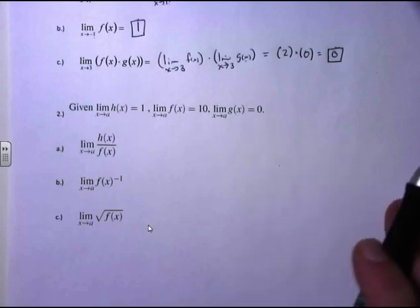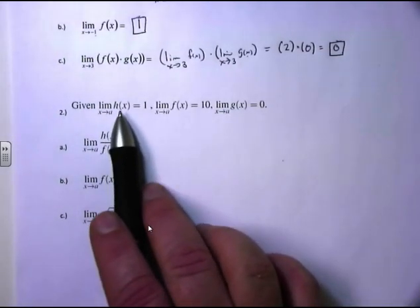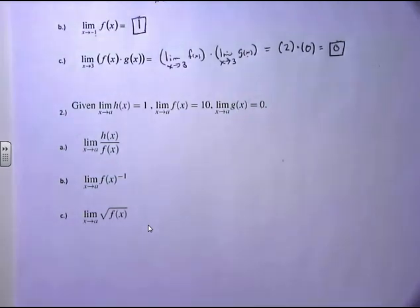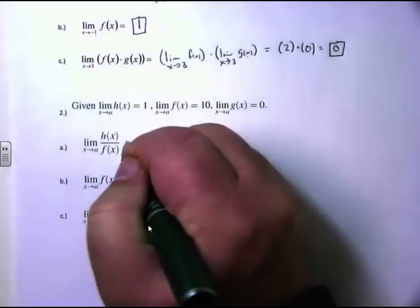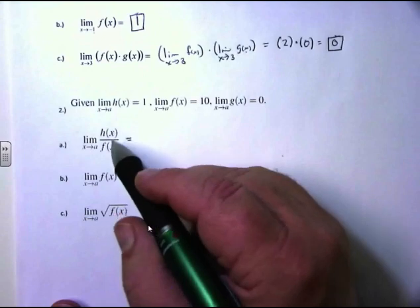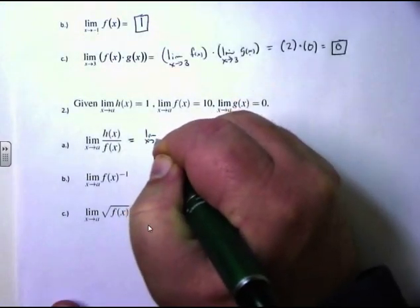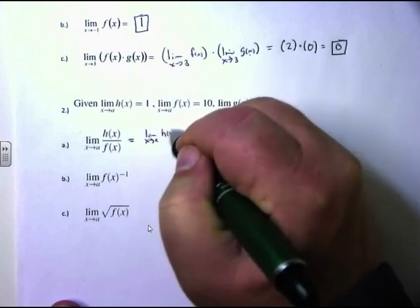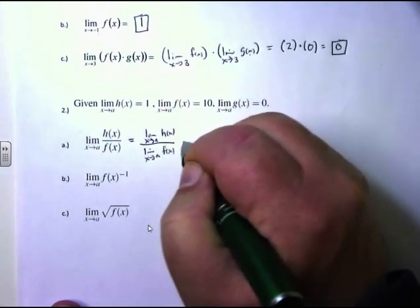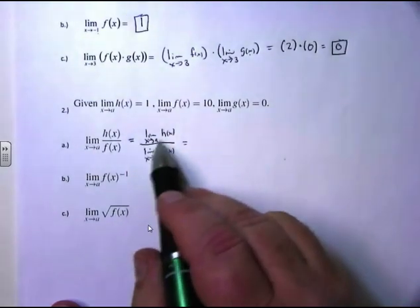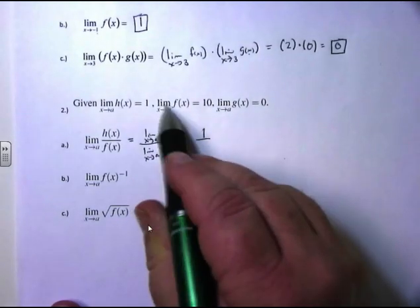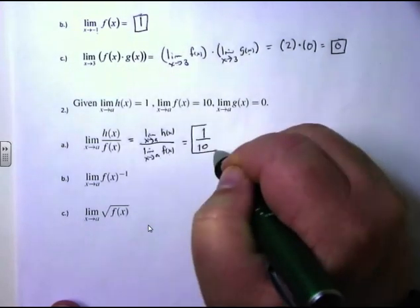We're given this information: the limit as x approaches a of h of x equals 1, the limit as x approaches a of f of x equals 10, and the limit as x approaches a of g of x equals 0. We want to take the limit as x approaches a of h of x over f of x. According to our limit laws, this is the limit of h of x divided by the limit of f of x, which is 1 over 10, or one tenth.